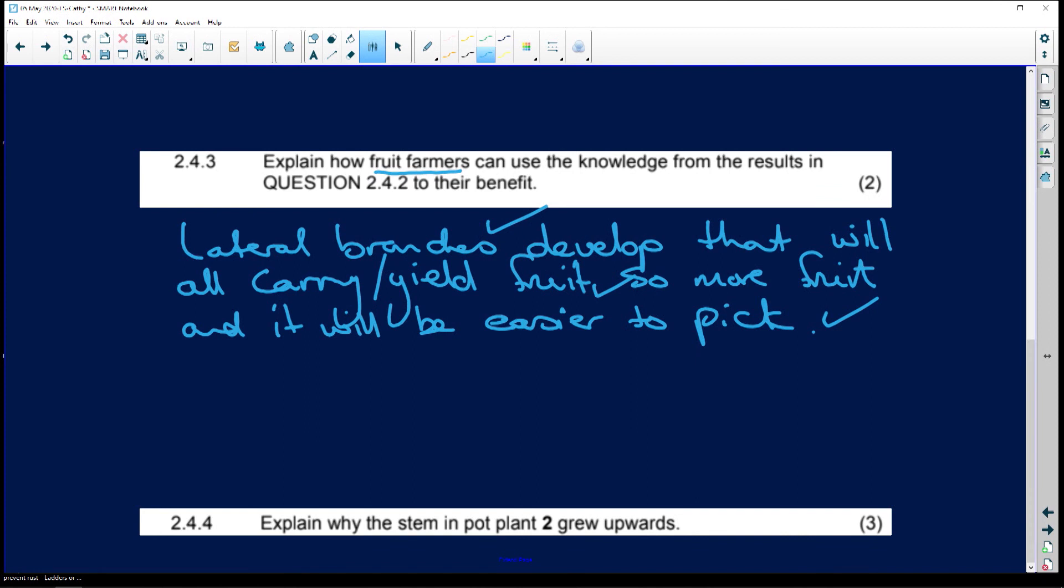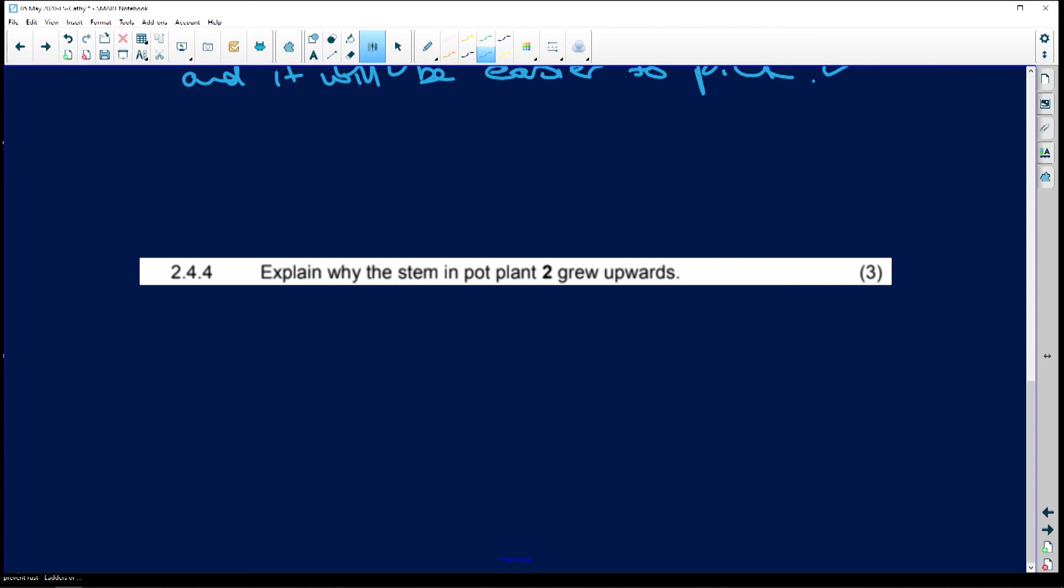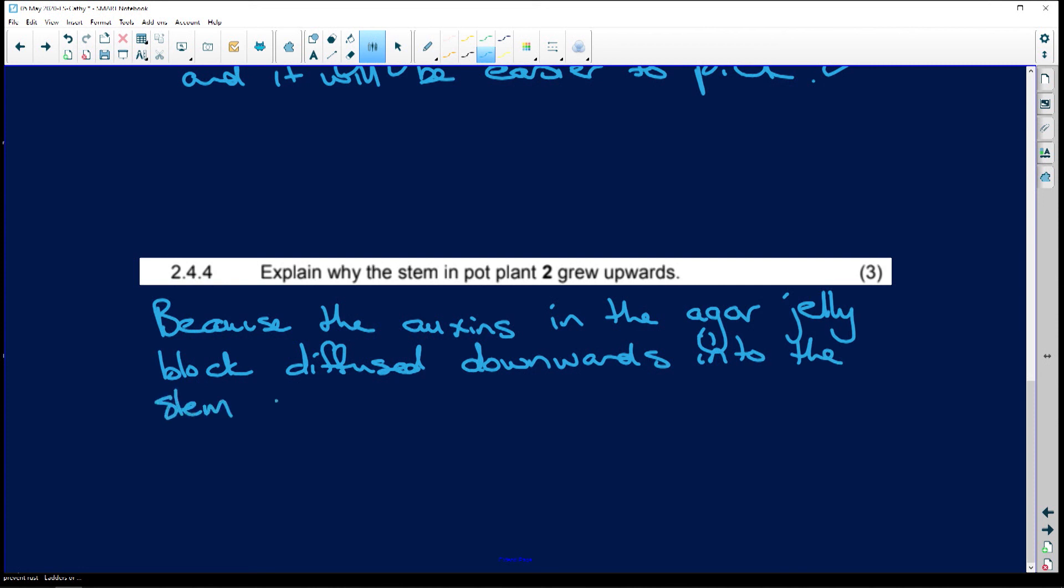Then it says, explain why the stem in pot plant two grew upwards. Well, that's easy because the auxins or plant hormones in the agar jelly block diffused or moved downwards into the stem and caused cell elongation and growth upwards. There you go. All right.